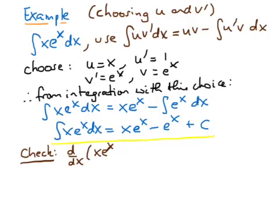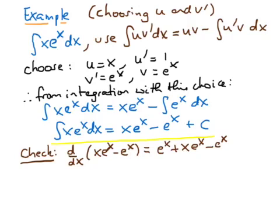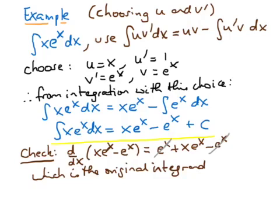We can check that our work is correct for an indefinite integral quite easily: we take our result, differentiate it, and see that we regain the original integrand. We differentiate x·eˣ minus eˣ. Using the product rule: differentiating x gives 1 times eˣ, that's eˣ, plus x times the derivative of eˣ which is eˣ, minus the derivative of eˣ which is eˣ. The eˣ from the product rule and the minus eˣ cancel, and we are left with x·eˣ, the original integrand. That shows us we've calculated the integral correctly.